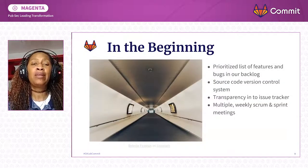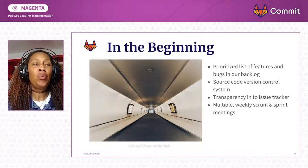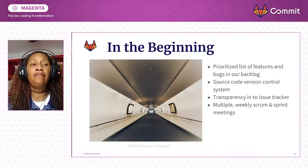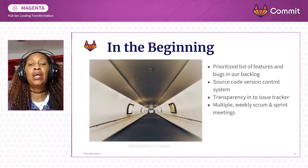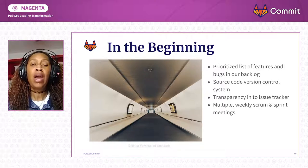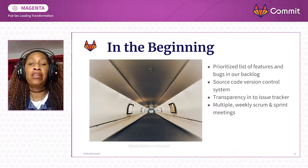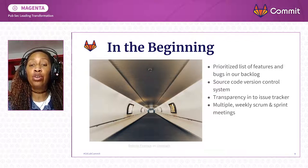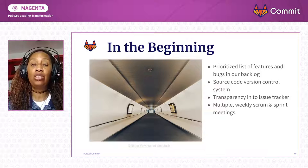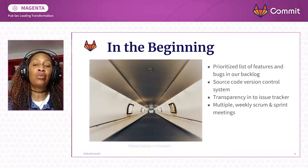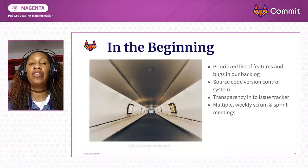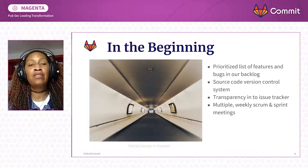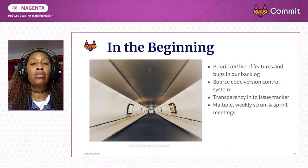Our unit, before we got started, was on a very strong footing. We had a very strong, very focused, small, well-practiced team. We are very cohesive in what we do and well-practiced in our agile workflow. We have a prioritized list of features and bugs in our backlog, we use a source code version control system, we have transparency into our issue tracker, and we do scrums, sprints, retrospectives — all of those agile things. We're very good at that, and that is what gave us a very strong beginning in our particular journey.